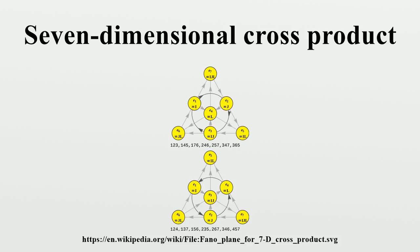In three dimensions, the cross-product is invariant under the action of the rotation group SO(3), so the cross-product of X and Y after rotation is the image of X times Y under the rotation. But this invariance is not true in seven dimensions—the cross-product is not invariant under the group SO(7). Instead it is invariant under the exceptional Lie group G2, a subgroup of SO(7).